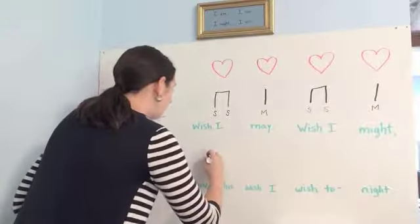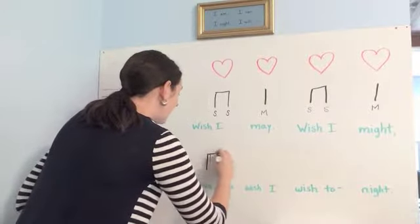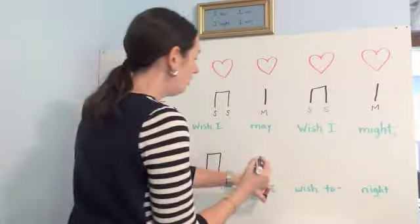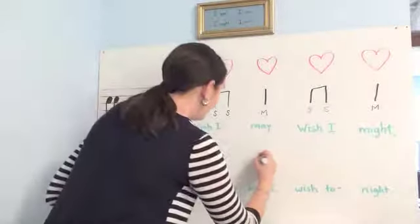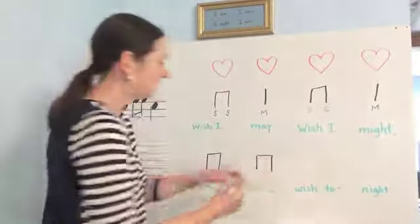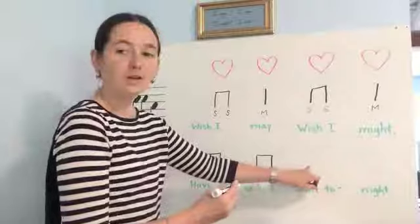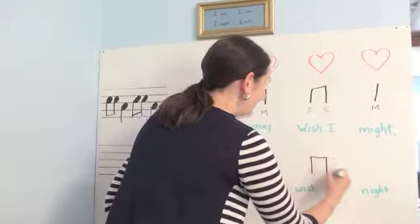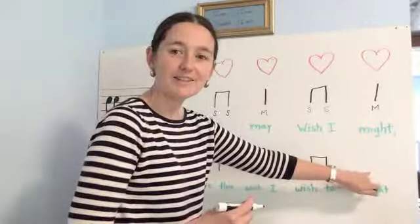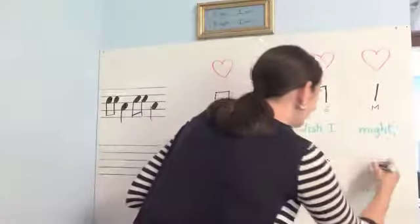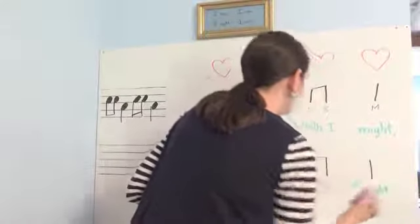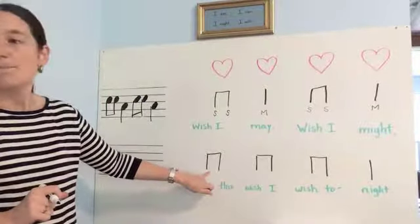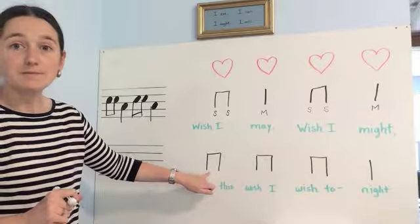So we have: "have this" is tee-tee; "wish I" — and that's also a tee-tee; "wish to" — that's also a tee-tee; and then "night" — that's a tee-tee. Good job, Thomas. You guys got it. Now, can you tell me if it's a so or a me?